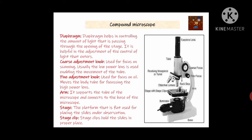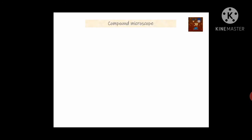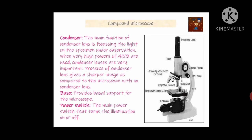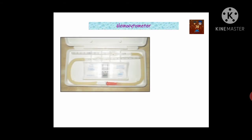The arm supports the tube of the microscope and connects to the base. The stage is the flat platform used to place the object we want to observe; it contains stage clips to hold the slide properly and sometimes has vertical scales. The condenser lens focuses light on the specimen under observation and is especially important when using very high powers such as 400x. The base is what the entire microscope stands on. There is also a plano-concave mirror — one side plane and one side concave — used for different light conditions, and a power switch.